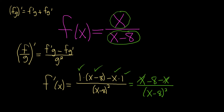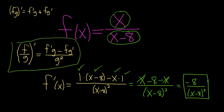The x's cancel, so we end up with negative 8 over (x minus 8) squared — that's the derivative using the quotient rule. This formula is totally worth knowing: derivative of the top times the bottom, minus the top times the derivative of the bottom, over the bottom squared — very similar to the product rule, except you have a minus and you're dividing by g squared.